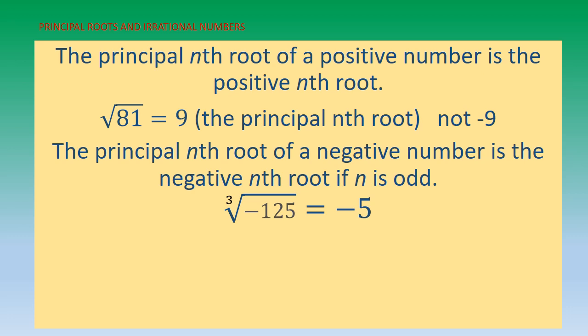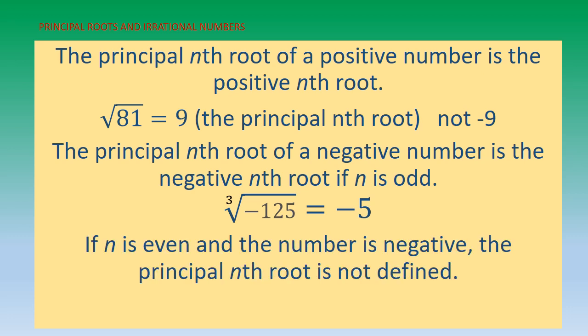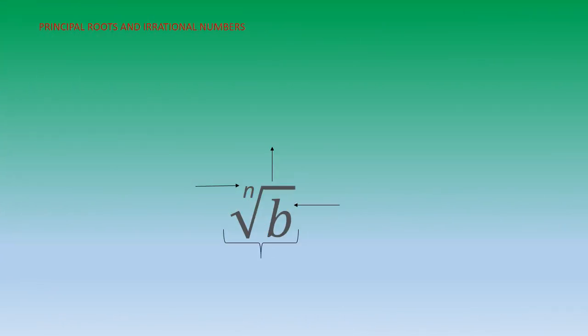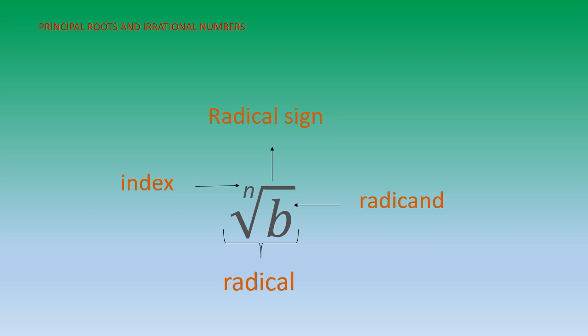This is an illustration of that concept. The third rule: if n is even and the number is negative, the principal nth root is not defined. For example, √(−25) is undefined — there is no answer. We also have the parts of a radical: the radical sign, the index, the radicand, and the whole expression is called the radical.